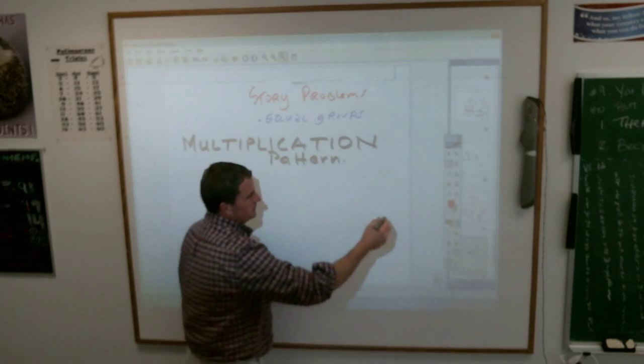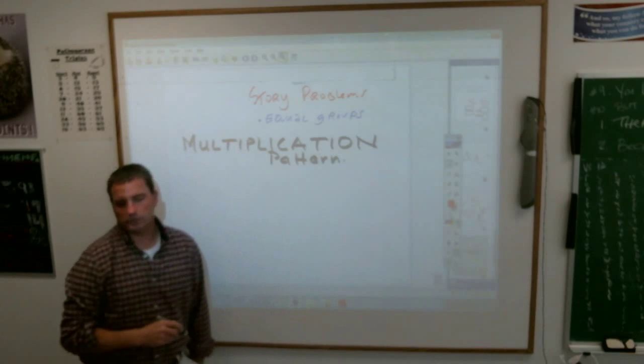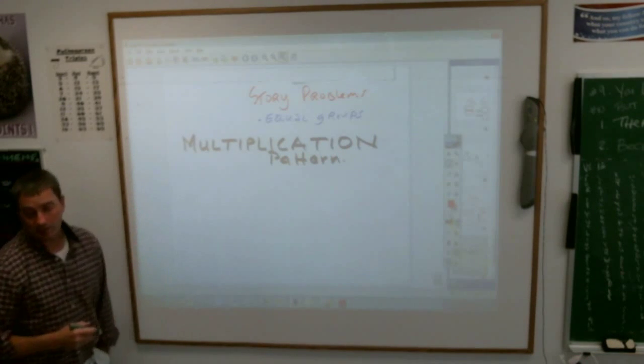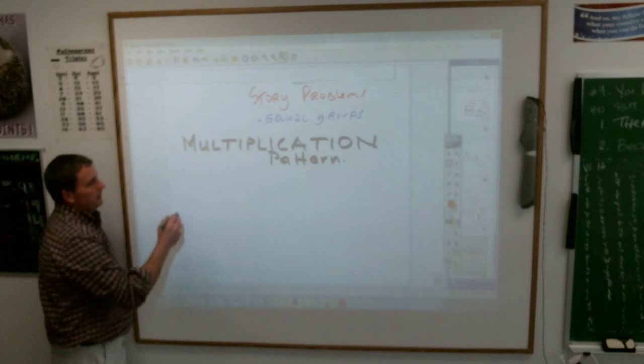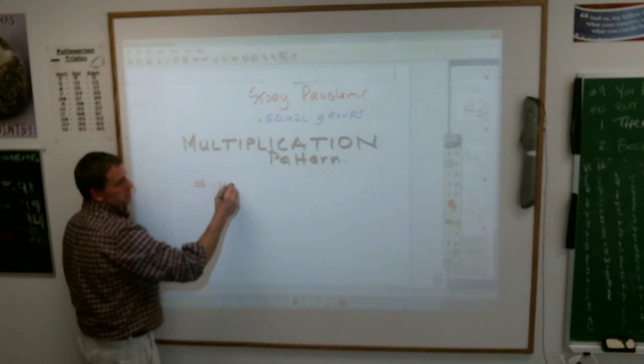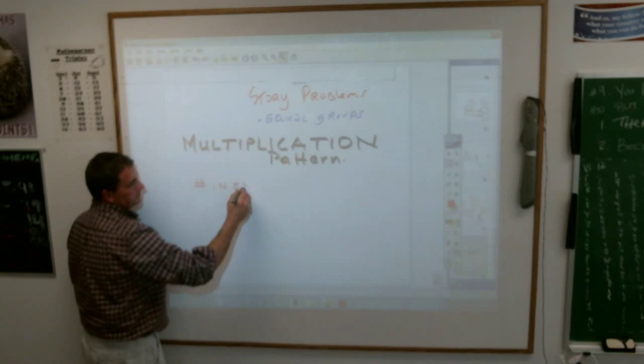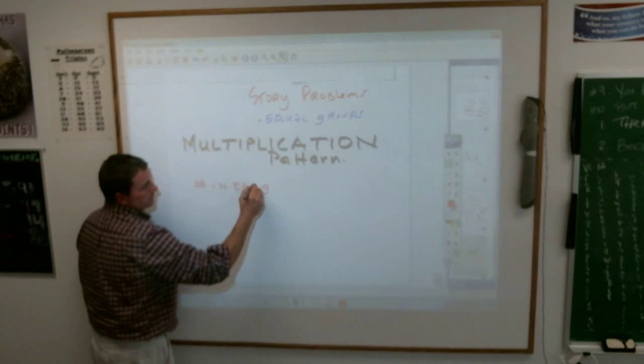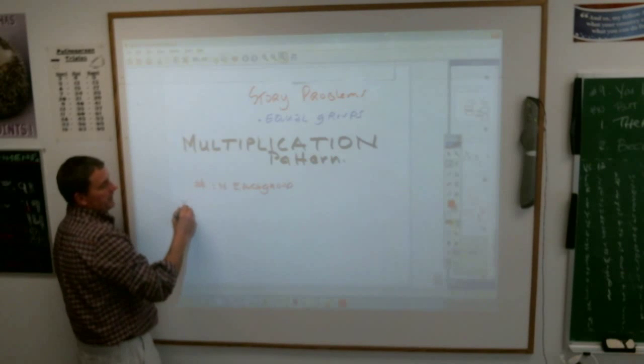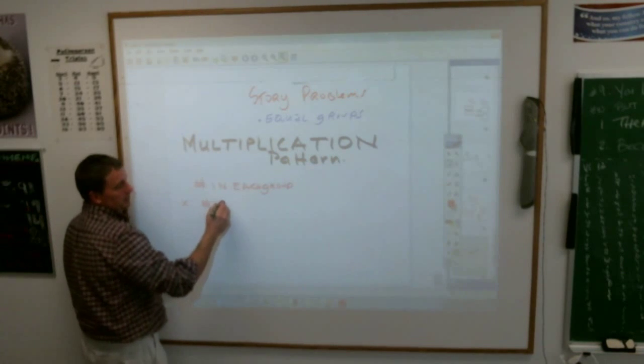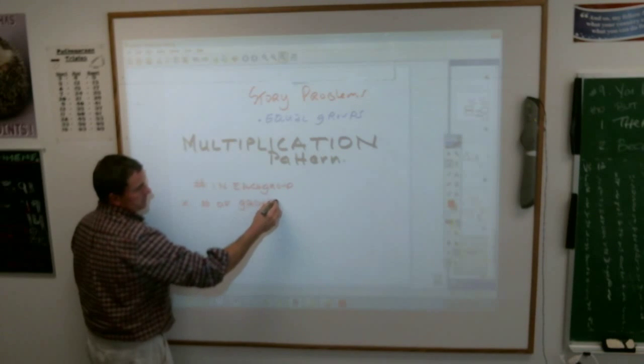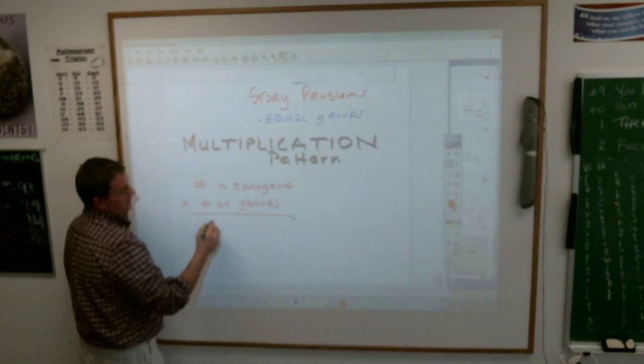But here is the basic garden variety. When you see a multiplication of equal group problem, they usually look like this. If you take the number in each group, hashtag, number in each group, and you multiply it by the number of groups, guess what you'll get? The total.